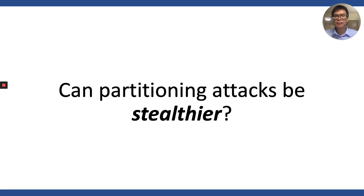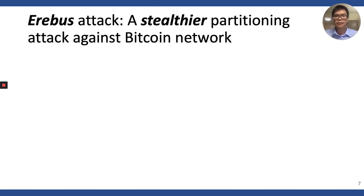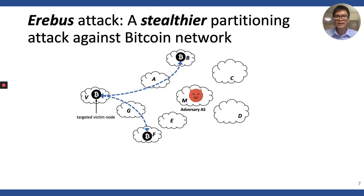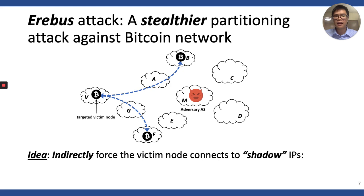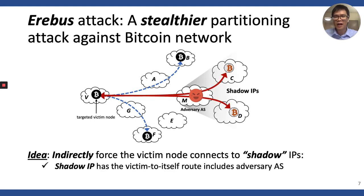In this talk, we asked: can partitioning attacks be stealthier? The answer is yes. We present the EREBUS attack, a much stealthier partitioning attack against the Bitcoin network. Our EREBUS attack requires the same attack capabilities as the previous work, which is controlling an ISP. The attacker's goal is to control all connections of the victim node, as shown on the left-hand side in this figure. The main idea is to indirectly force the victim node to connect to so-called saddle IPs. We define saddle IPs as any IP address that has a routing path from the victim to itself including the adversary AS.